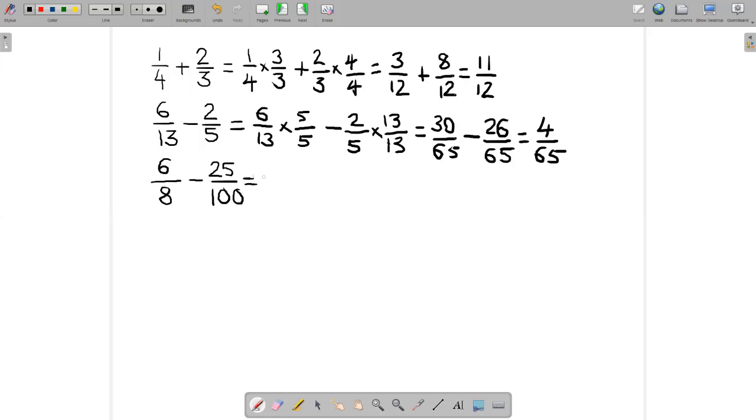The least common multiple of eight and 100 is 200. Write down the six over eight again, multiply by 25 over 25. And then 25 over 100, if we multiply that by two over two, we'll get 200 as the denominator there as well.